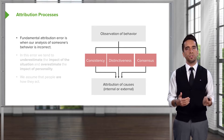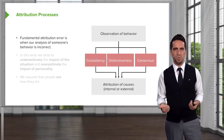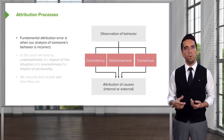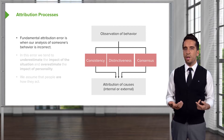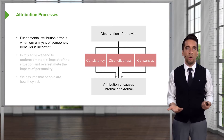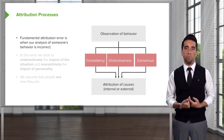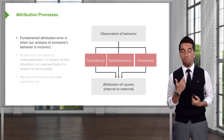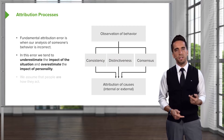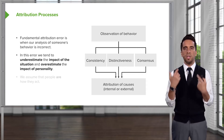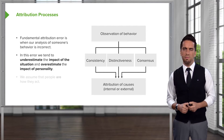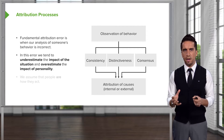Fundamental attribution error is when our analysis of someone's behavior is incorrect. If we say, 'What's wrong with Dave? He's so rude, I don't like him anymore because he didn't say hi,' we're reflecting his behavior onto his personality and saying he's not a nice person. But is that fair or correct? We don't know — maybe Dave really had to go to the bathroom, maybe he didn't see you, maybe he was about to throw up and just needed to get to a bathroom. In this error, we tend to underestimate the impact of the situation and overestimate the impact of personality. We assume that people are how they act, and that's not always the truth.